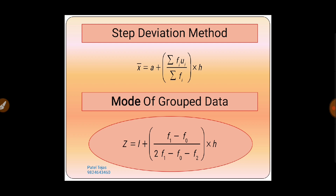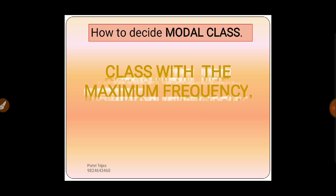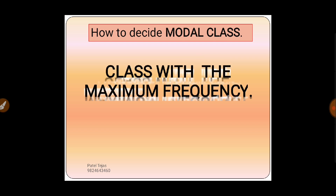There are many new terms here — what is l, what is f1, what is f0, what is f2. We already know h is the class length from the previous lecture. To understand all these new terms, first we need to know how to decide the modal class. Modal class means the class with the maximum frequency.